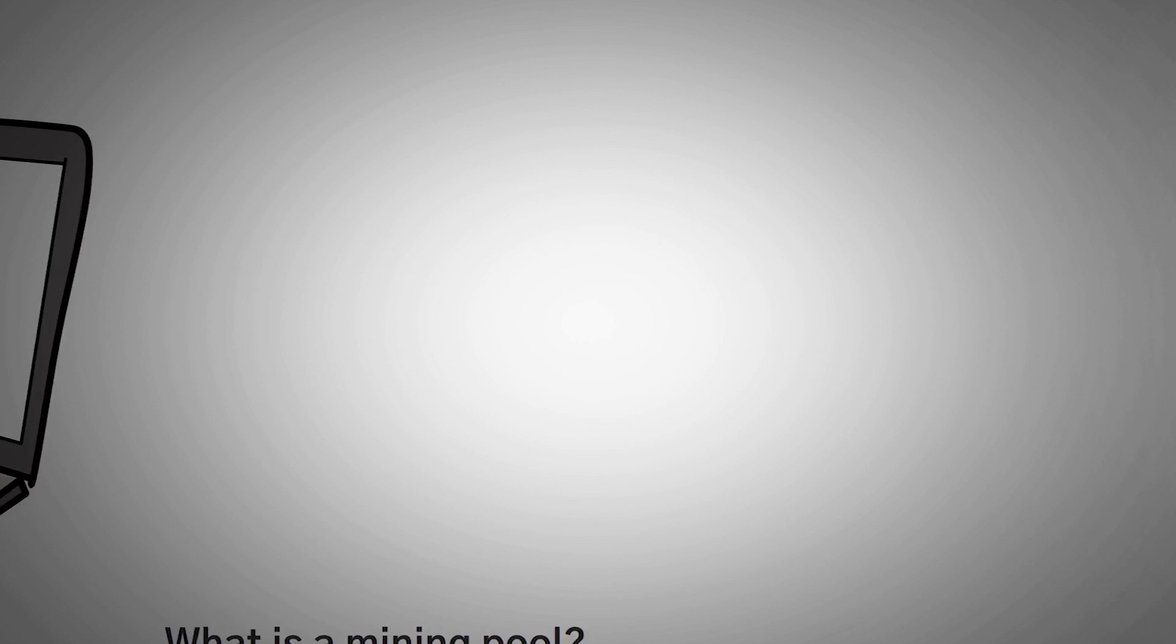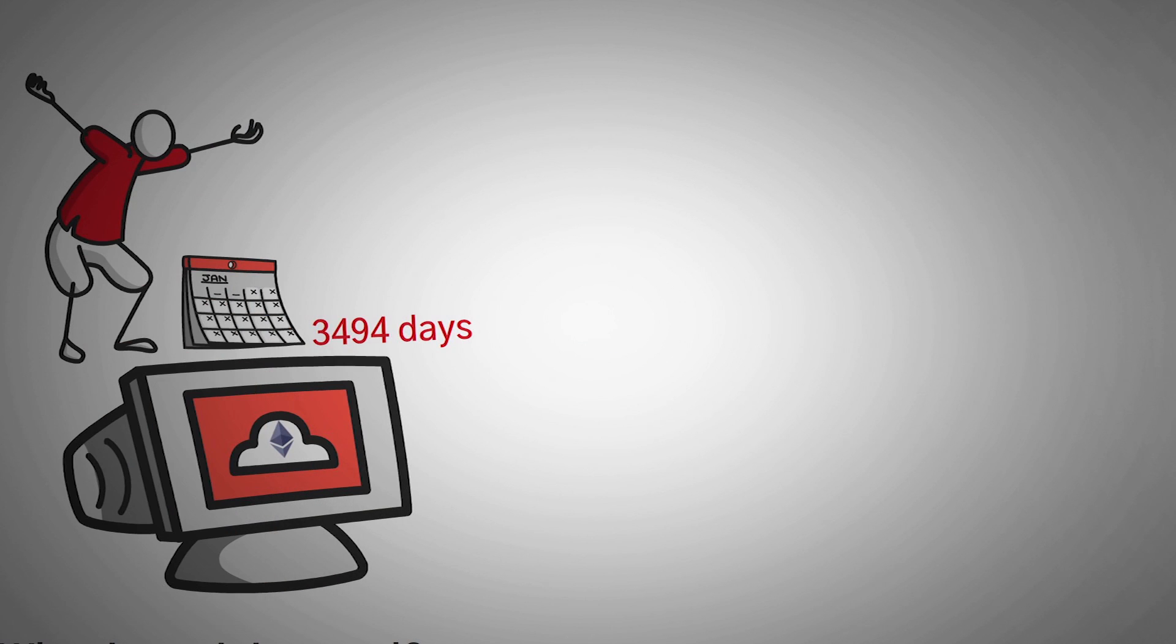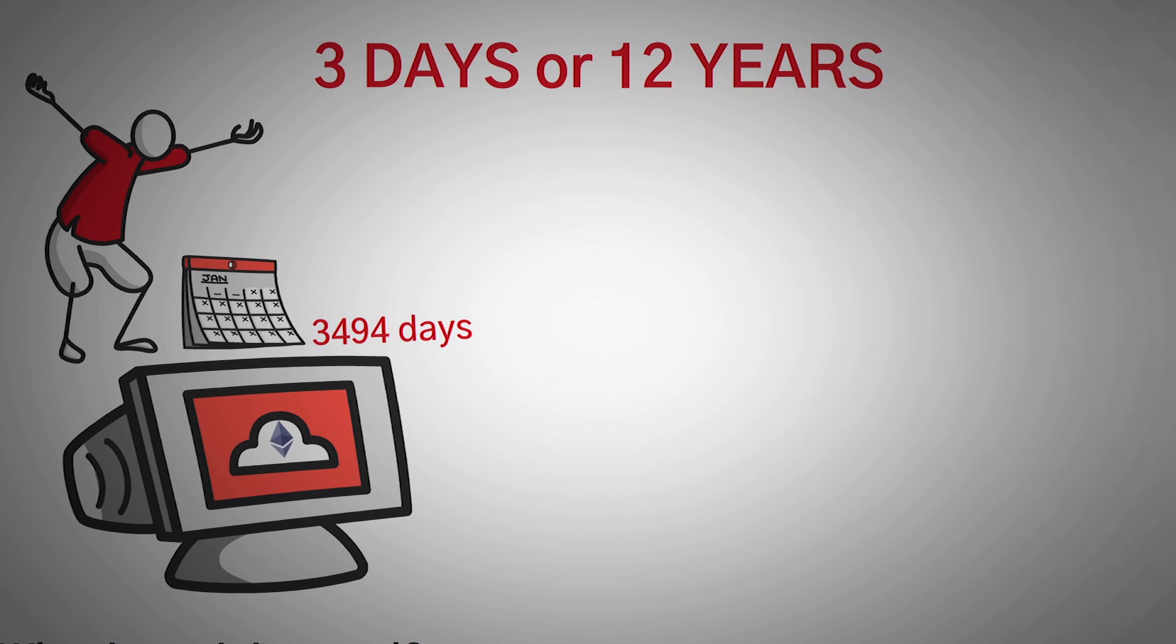You could solve that on your own. Here's the issue though. If you used a general personal computer to try mining Ethereum, it would take you around 3,494 days on average to solve the block on your own. Now this means you could solve it in three days or you could solve it in 12 years. But on average, this is how long it would take you.